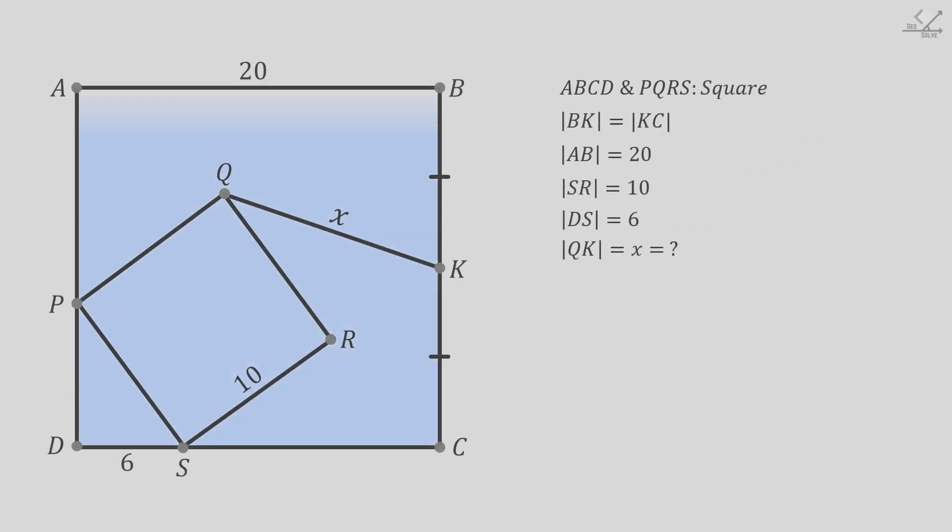We are given these two squares with side lengths 20 and 10 units. These line segments are equal, and we need to find this missing length x. We know that the side length of the large square is 20 units, so these equal parts will be 10 units each.